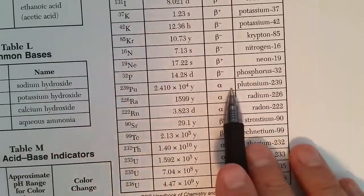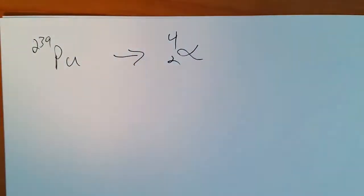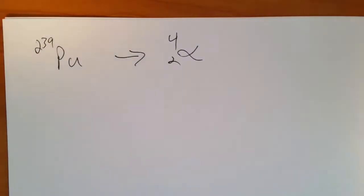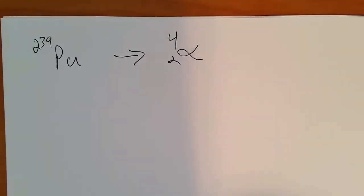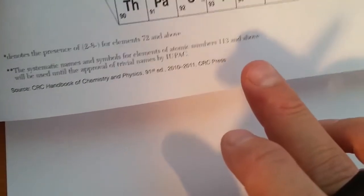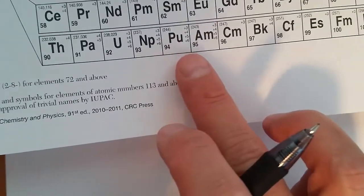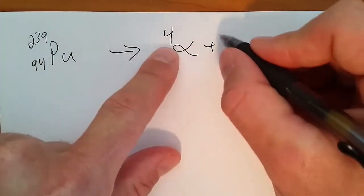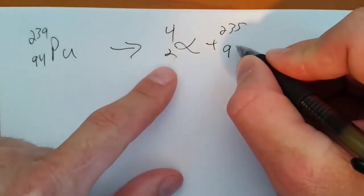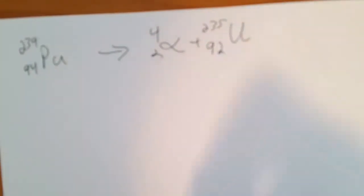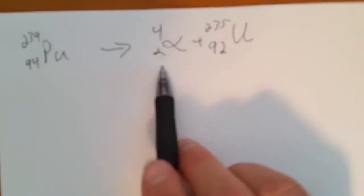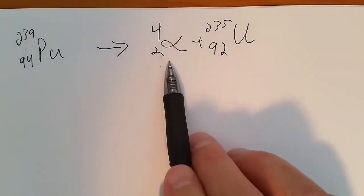Pu-239 undergoes alpha decay. We look for plutonium and see the atomic number is 94. I'll do a little bit of math: 239 minus 4 is 235, 94 minus 2 is 92. We look on the reference table and see element 92 is uranium. So plutonium-239 undergoes alpha decay, gives off an alpha particle, and becomes uranium.